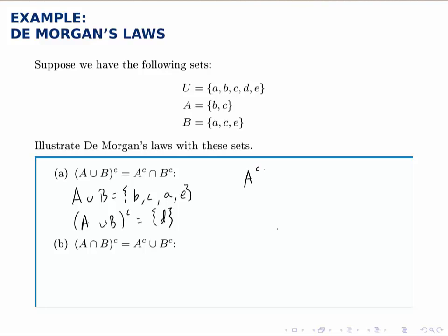Then if we work the right hand side, the complement of A, if A is the elements B and C, the complement would be A, D, and E. Similarly, for B complement, if we have A, C, and E, the complement of that would be the B and D. And then finally, if we take the intersection of these complements, we notice the only thing common to both of them is that one element D.